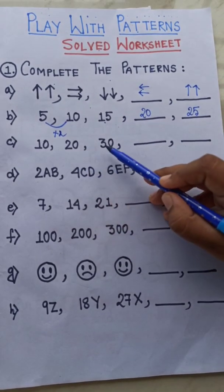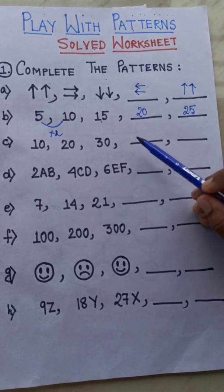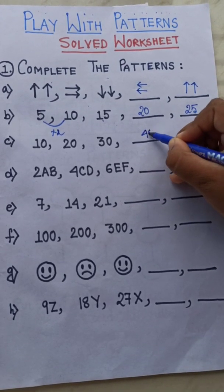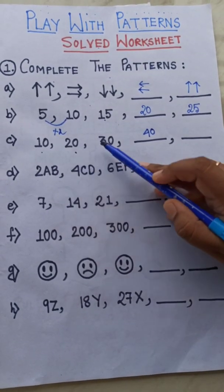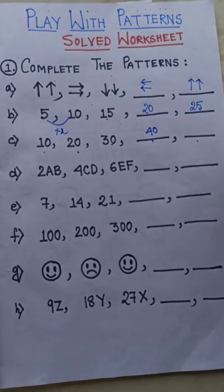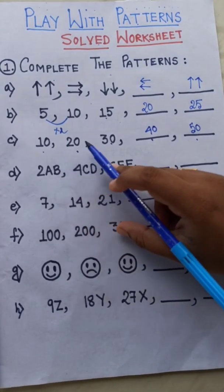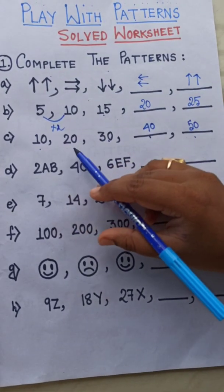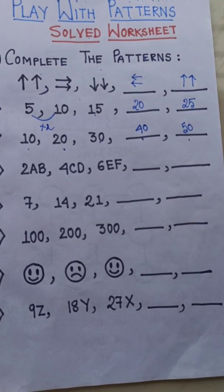See the next one: 10, 20, 30. You can easily say what will be next — it will be 40, then 50. It is a table of 10: 10 ones are 10, 10 twos are 20, 10 threes are 30, then 40, then 50. It is also increasing by 10: 10 plus 10 is 20, 20 plus 10 is 30.